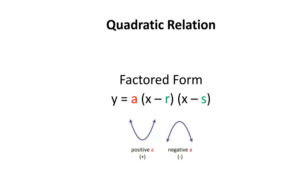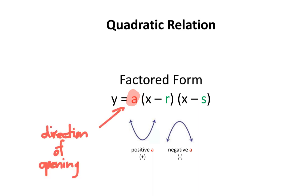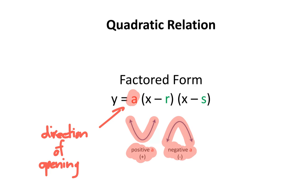A quadratic relation can also be represented with another type of equation. This equation is called factored form. Just like before, the variable a represents the direction of opening. If a is positive, the parabola is smiling or opening upwards. If a is negative, the parabola is frowning or opening downwards.